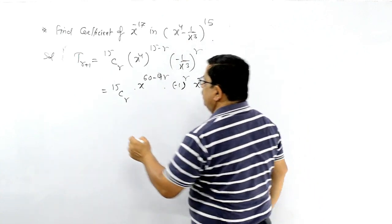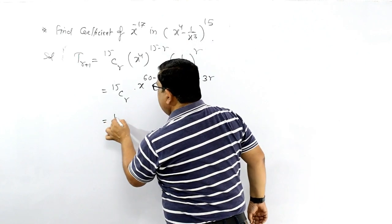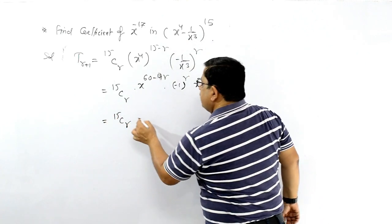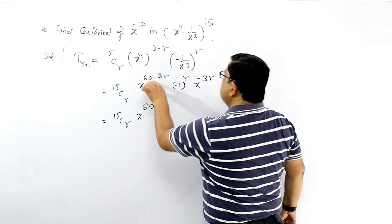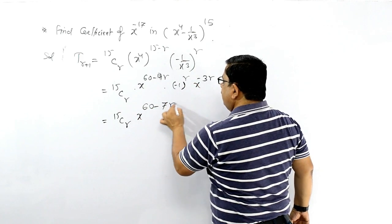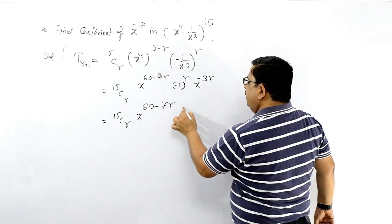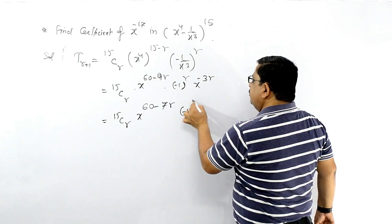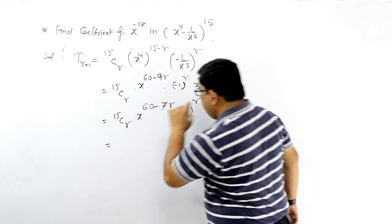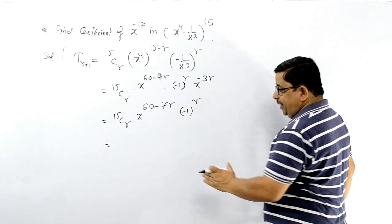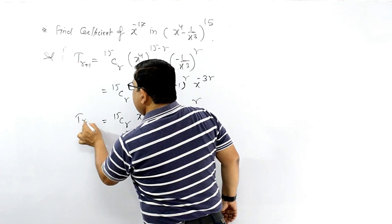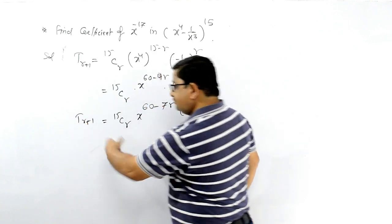So ultimately you can write: T(r+1) = 15Cr · x to the power (60 minus 7r) · (-1)^r. अब directly इसमें comparison करेंगे।